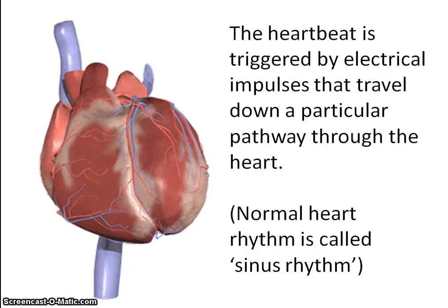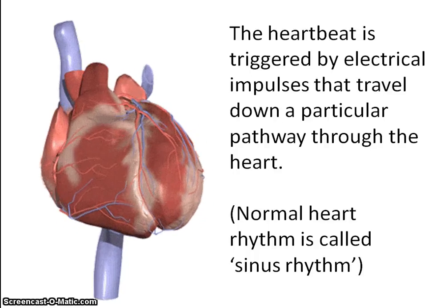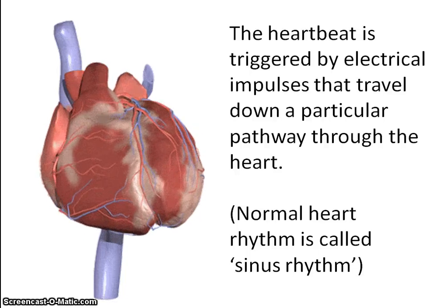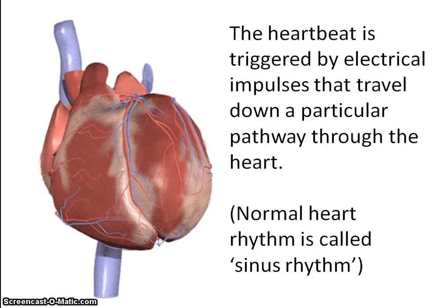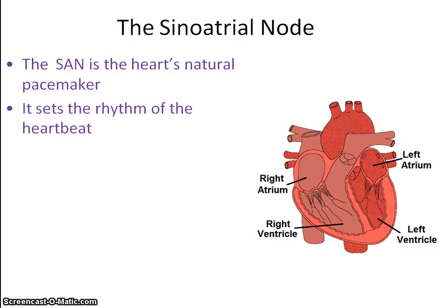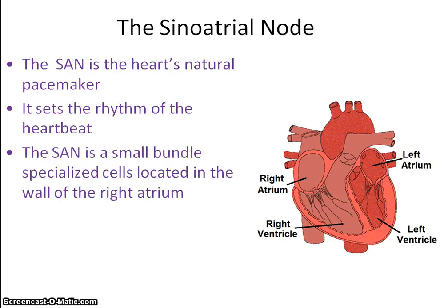We're going to be looking at the pathway of electrical impulses through the heart. It all starts at the sinoatrial node, the SAN, referred to as the heart's natural pacemaker. It sets the rhythm of the heart.